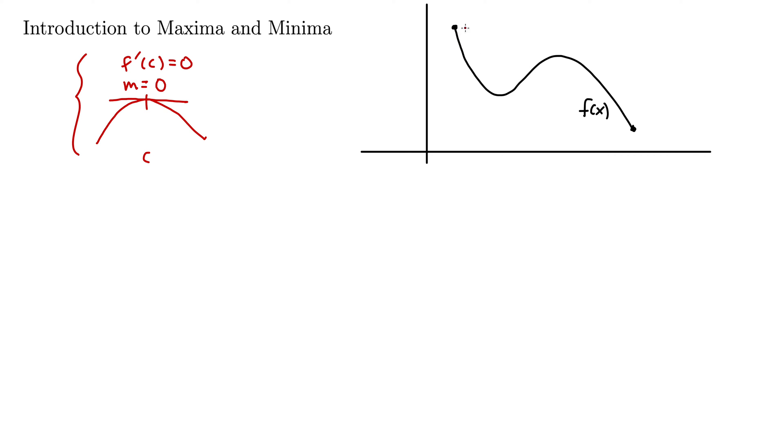So in this function here, this top point, the very highest point, is what we'll call the absolute maximum. And we'll define this more rigorously shortly. But essentially what it means is it's the biggest point, the biggest y value anywhere on the graph. There's no other point on this curve of F of X that goes higher than that absolute maximum right there.